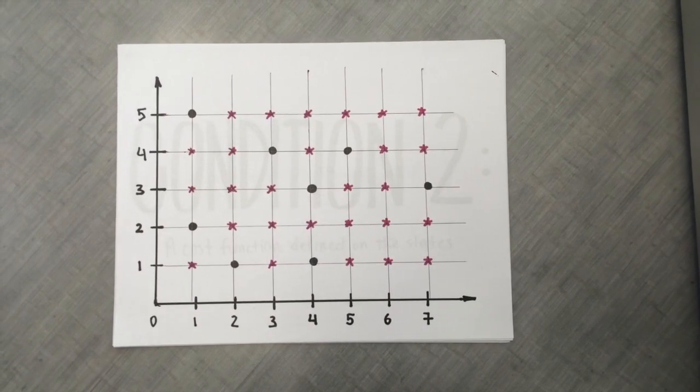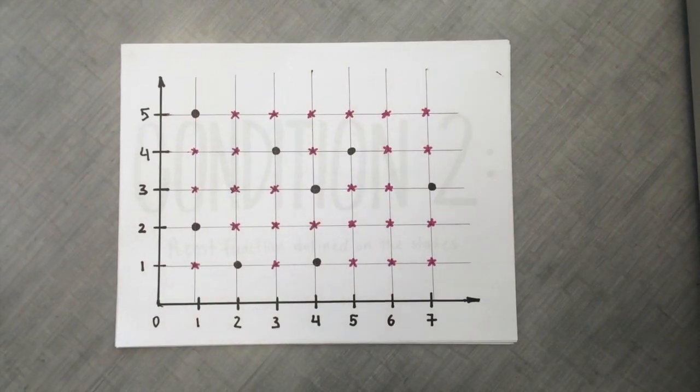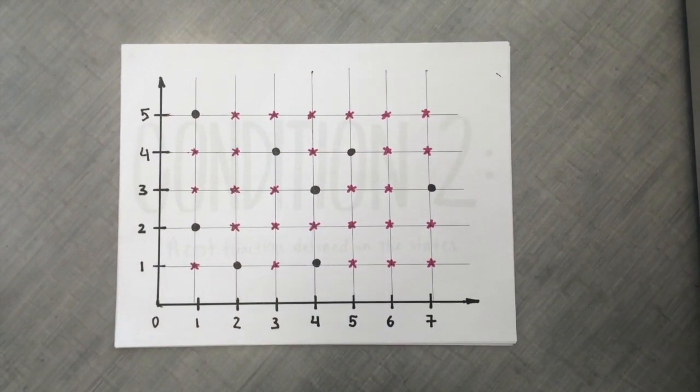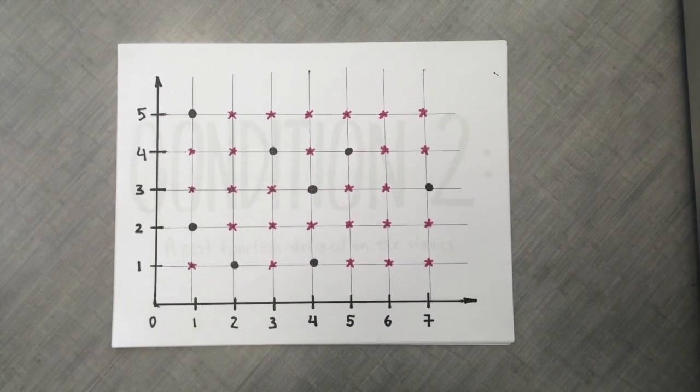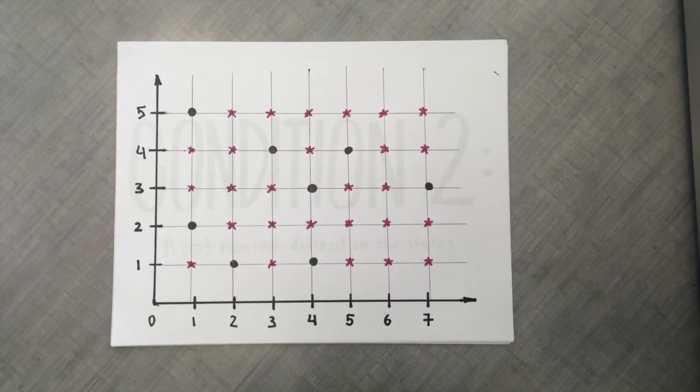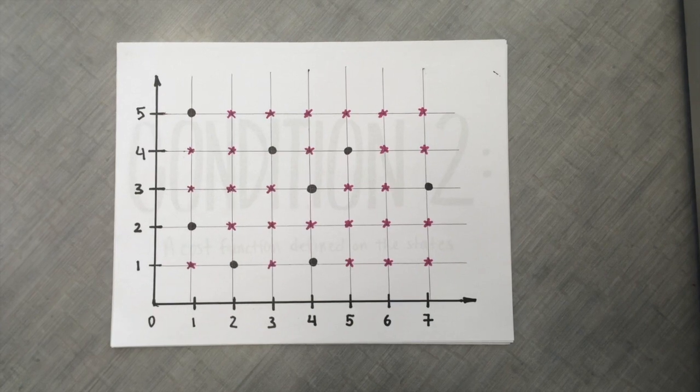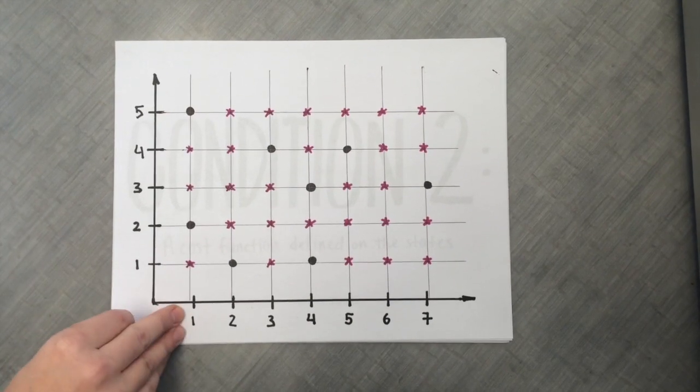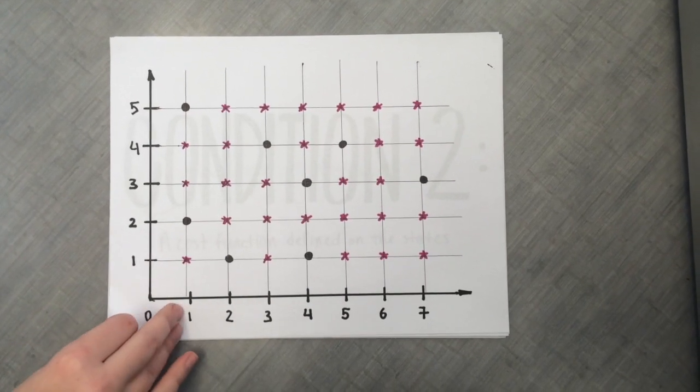The coordinates of the centers are integers, so any star or demand point on this graph is a candidate solution for a center. We can see that our set of possible solutions is finite. This fulfills condition 1.